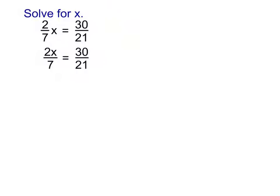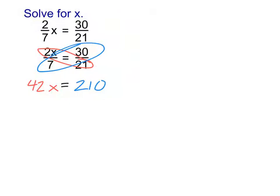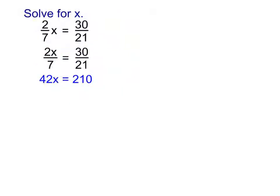Go ahead and do the cross-multiplication and see what you get. When we cross-multiply, I'm going to do 2x times 21, which gives us 42x. Then it's equal to — cross-multiplying the other way — 7 times 30, which is 210. So now I have 42x equals 210. Now it's easy to solve. One of the beautiful things about cross-multiplying is it takes something that looked really big and complicated and makes it something really easy. I just have to divide both sides by 42, and we find that x equals 5.